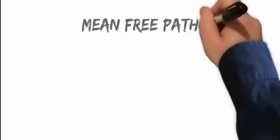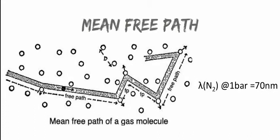The mean free path is the average distance traveled by a moving particle between successive impacts, or collisions.